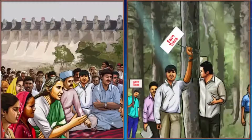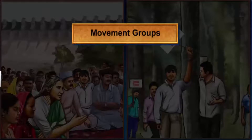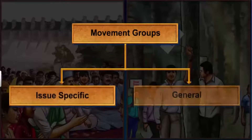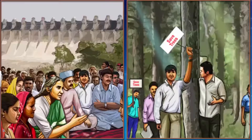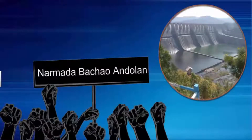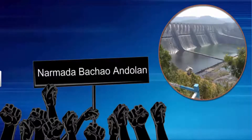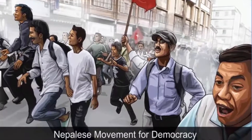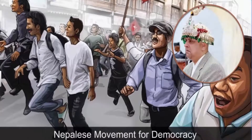Apart from pressure groups, we also have movement groups, which can be broadly classified under two types: issue-specific movements and general movements. An issue-specific movement seeks to achieve a single purpose within a specified time. For example, the Narmada Bachao Andolan started with a specific issue of the people displaced by the building of the Sardar Sarovar Dam on the river Narmada. Another example is the Nepalese Movement for Democracy, which was formed to overthrow King Gyanendra, who dismissed a democratically elected government.